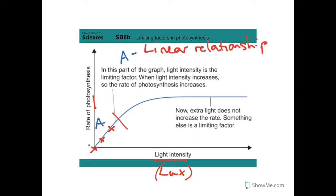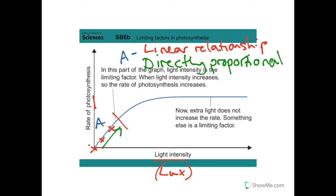More keywords here. Linear just means a straight line, and it's directly proportional. What that means is if you double one thing, it doubles the other. So during that first part of the graph, it's linear and directly proportional. If you double the amount of light, it would double the rate of photosynthesis.